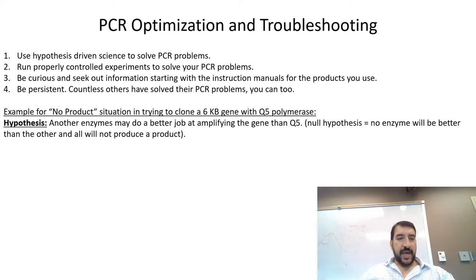An example of using hypothesis-driven science to figure out PCR problems would be this example here. We could have an example of a no-product situation when trying to clone a 6KB gene with Q5 polymerase. We'll set up a hypothesis. Our hypothesis will be that another enzyme may do a better job at amplifying the gene than Q5. Therefore, our null hypothesis will be that no enzyme will be better than any other enzyme and all of them will produce no product just like Q5 did.